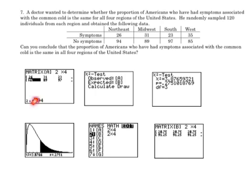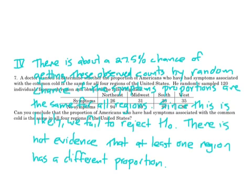On the calculator, go to matrix A with two rows and four columns, enter the numbers, go to chi-squared test, observed are in A, expected can be put in B. The calculator will clobber the previous numbers and put in the new expected counts. It calculates chi-squared, the p-value, and degrees of freedom. There's about a 27.5% chance of getting these observed counts by random chance if the null hypothesis is true — that the symptom proportions are the same for all regions. Since this is very likely, way more than 5%, we fail to reject the null hypothesis, and there is not evidence that at least one region has a different proportion.